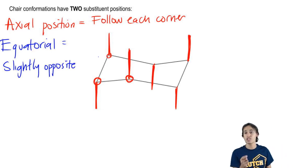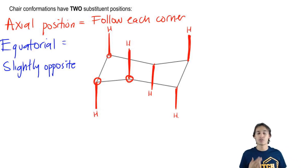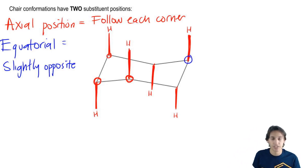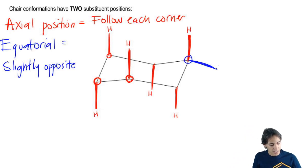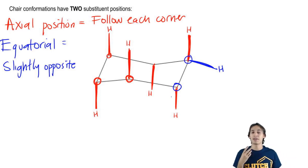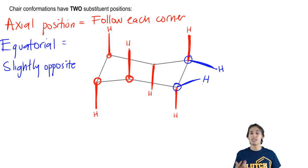Equatorial is going to be slightly opposite to the direction of each axial. So what that means is imagine that each of these corners have two H's. Some of the H's are going to be on the axial positions. Each carbon has one axial. Each carbon also has one equatorial. The equatorial positions are going to face slightly opposite to the axial. So that means notice this one right here. That one is facing up, that axial. That means that my equatorial position should face slightly down. So that means this H, the equatorial one, would face slightly down. Now let's look at this one. This one is facing down, so that means that my equatorial position should face slightly up.